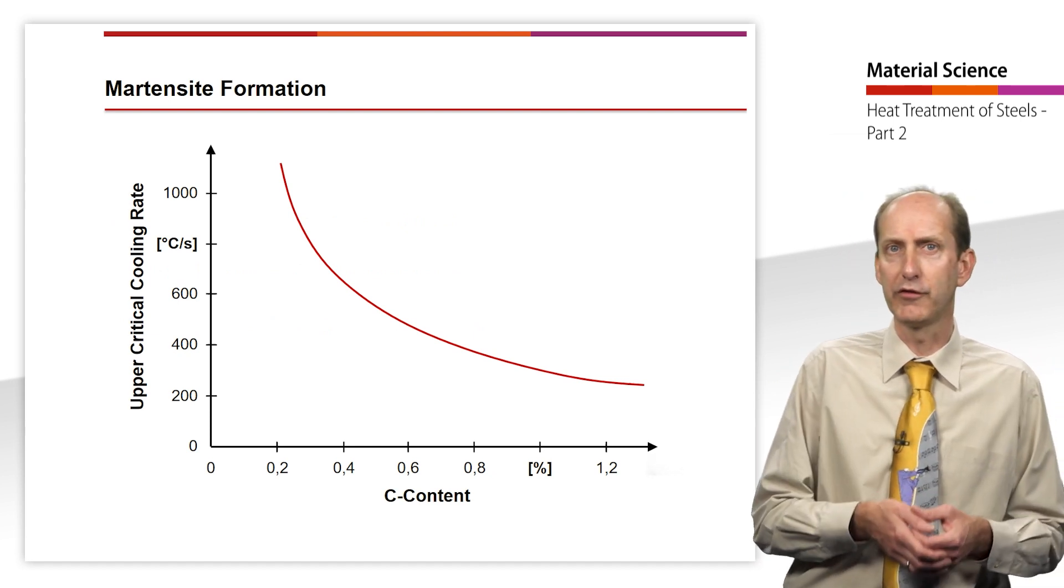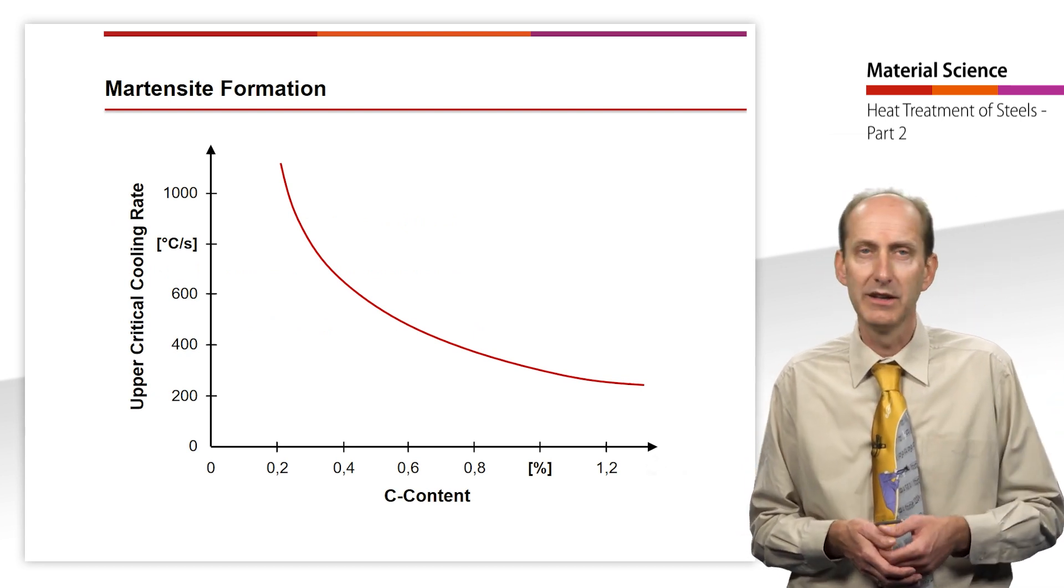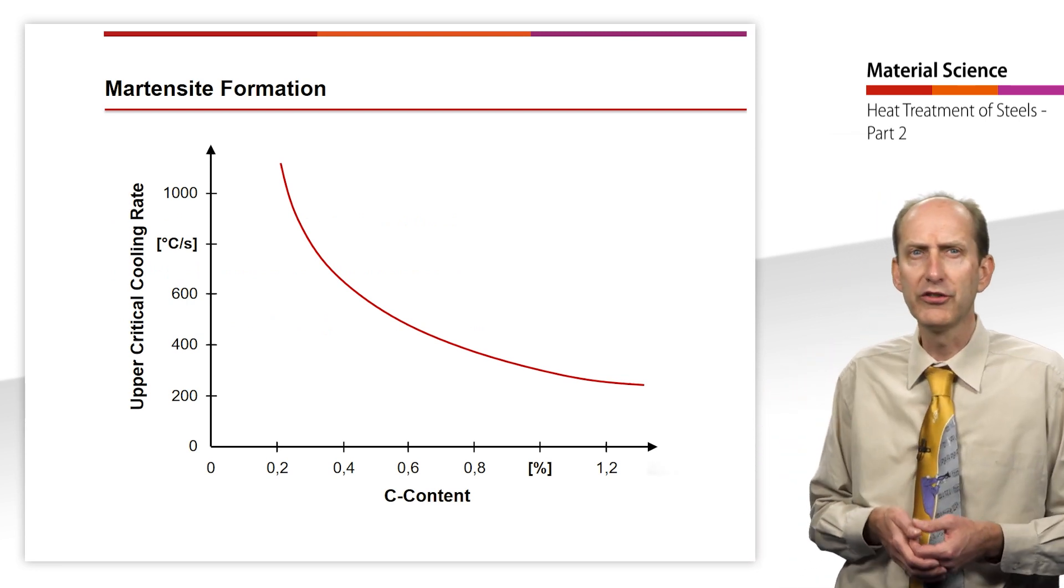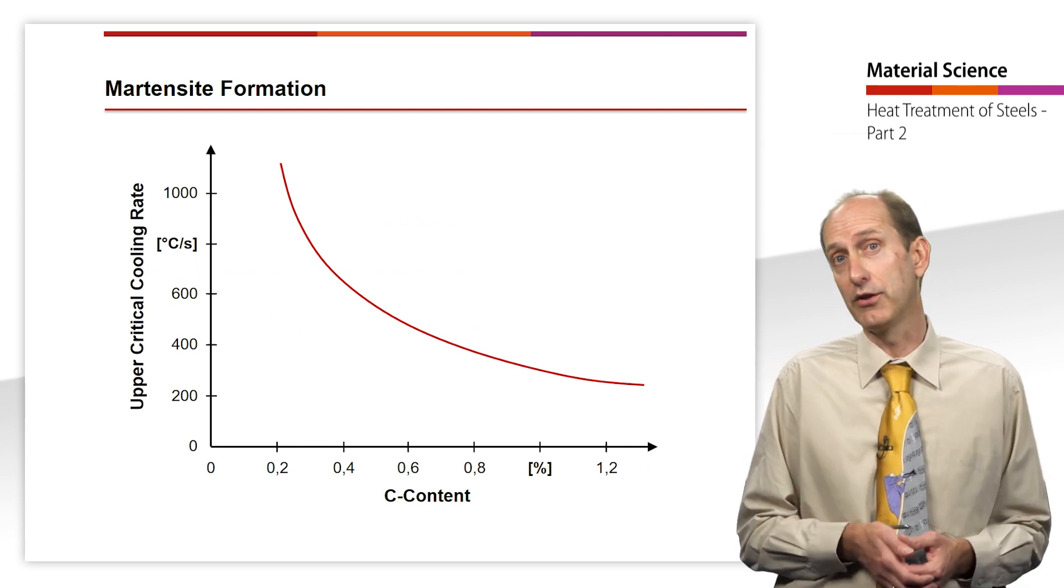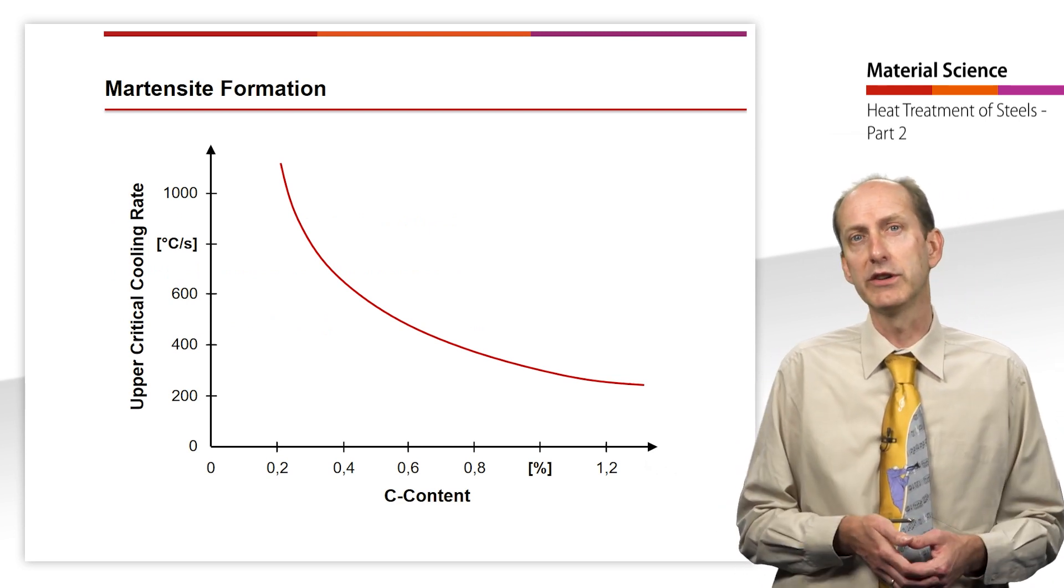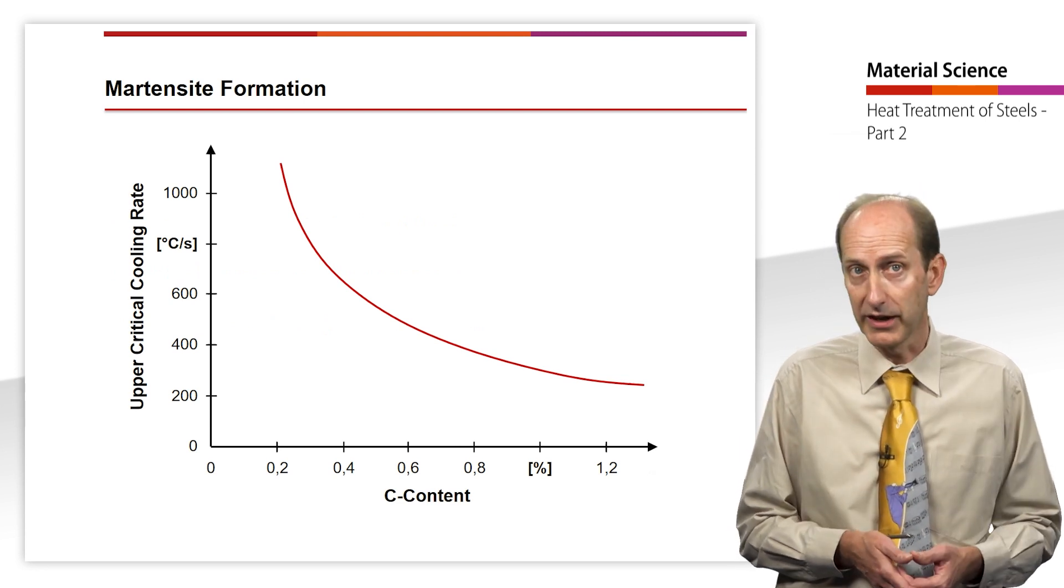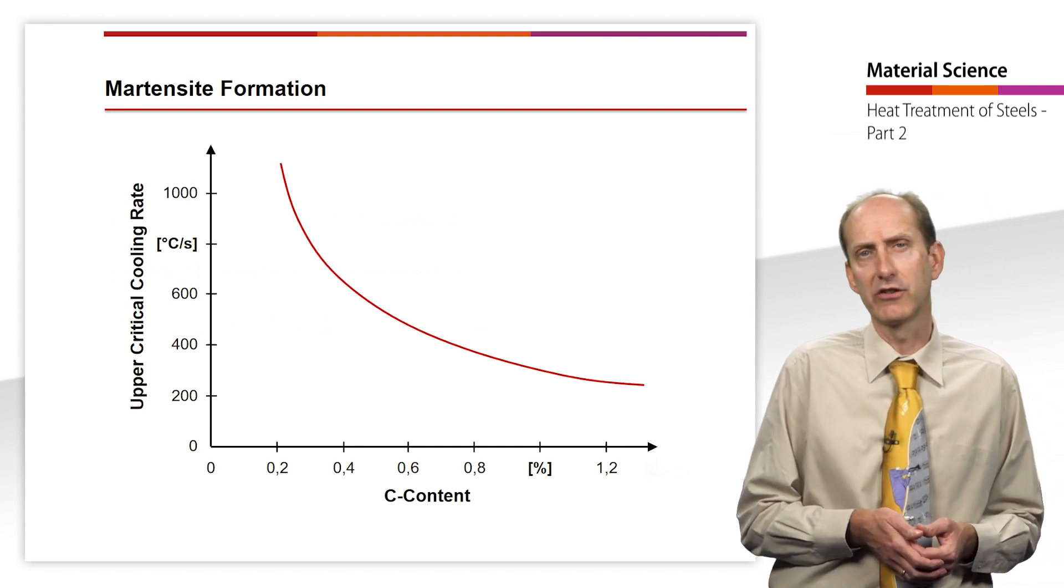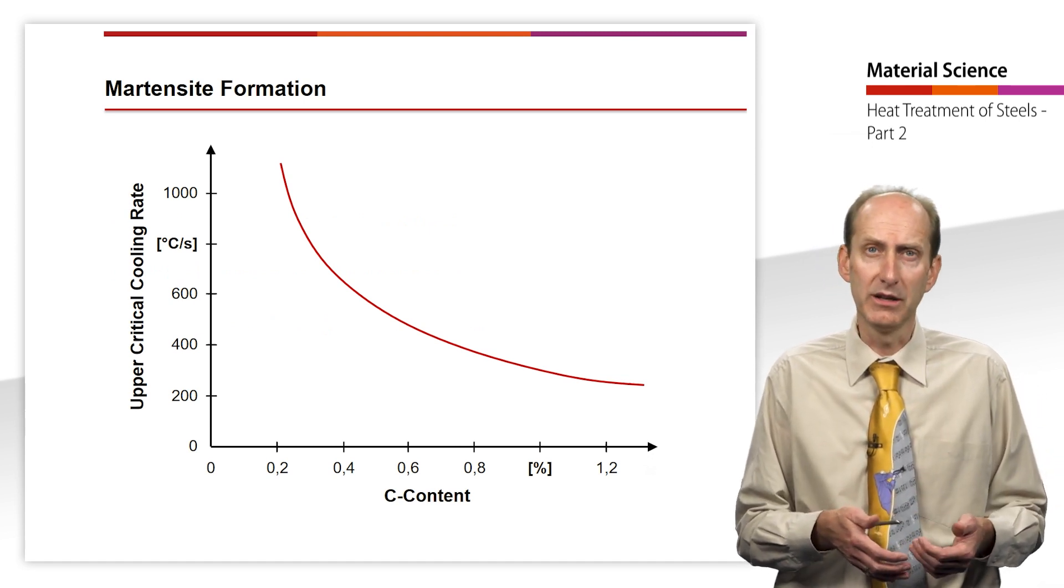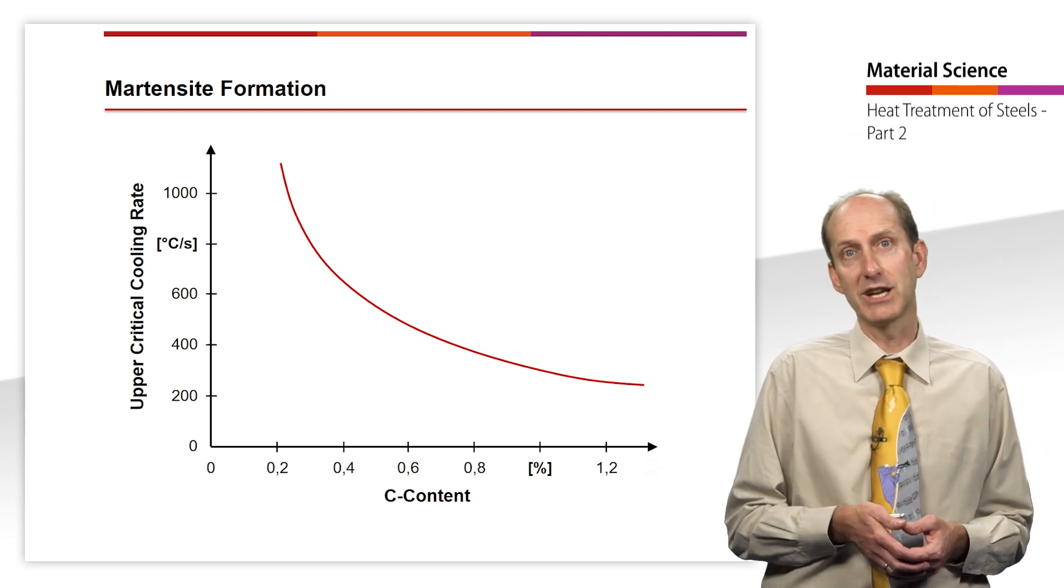For this purpose, cooling must be performed not only at the lower critical cooling rate, but also at the so-called upper critical cooling rate. This depends mainly on the carbon content and the content of other alloying elements. This figure shows how strong the influence of carbon content already is on the critical cooling rate. However, alloying elements such as manganese can also reduce the critical cooling rate to values below 100 degrees Celsius per second, even in quantities below 1%. In the video about the time temperature transformation diagram, we had already learned that with a high critical cooling rate, in the very short time available, diffusion of the carbon can no longer take place.